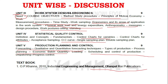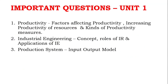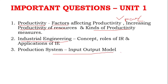The textbook is more than enough; a downloadable link will be provided so it will be very useful for full coverage. Now for question-wise discussion: for unit one, productivity is very important — the definition, factors affecting productivity, increasing productivity, and kinds of productivity measures can come as a Part C question. Industrial engineering concepts — roles of the industrial engineer, applications of industrial engineering, and the production system input-output model — are confirmed unit one questions.